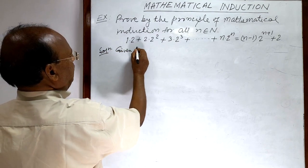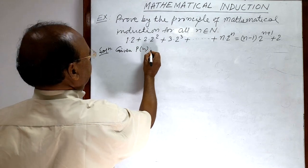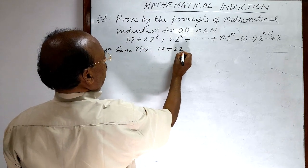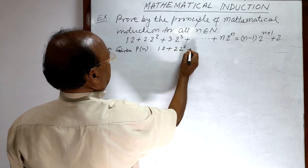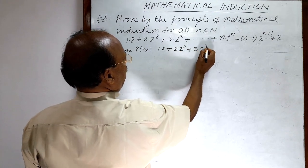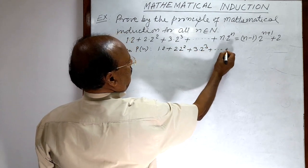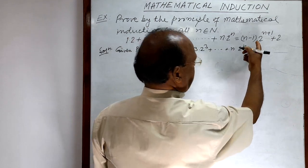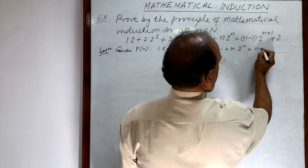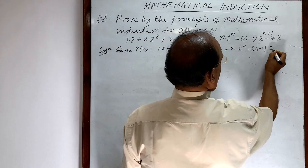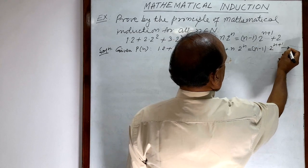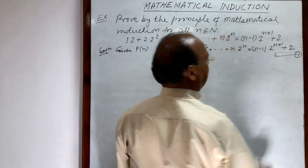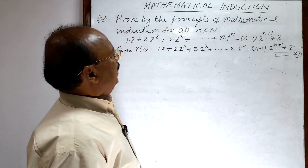The given mathematical statement is: 1·2 + 2·2² + 3·2³ + ... + n·2ⁿ = (n−1)·2ⁿ⁺¹ + 2. Let us call this relation number 1.